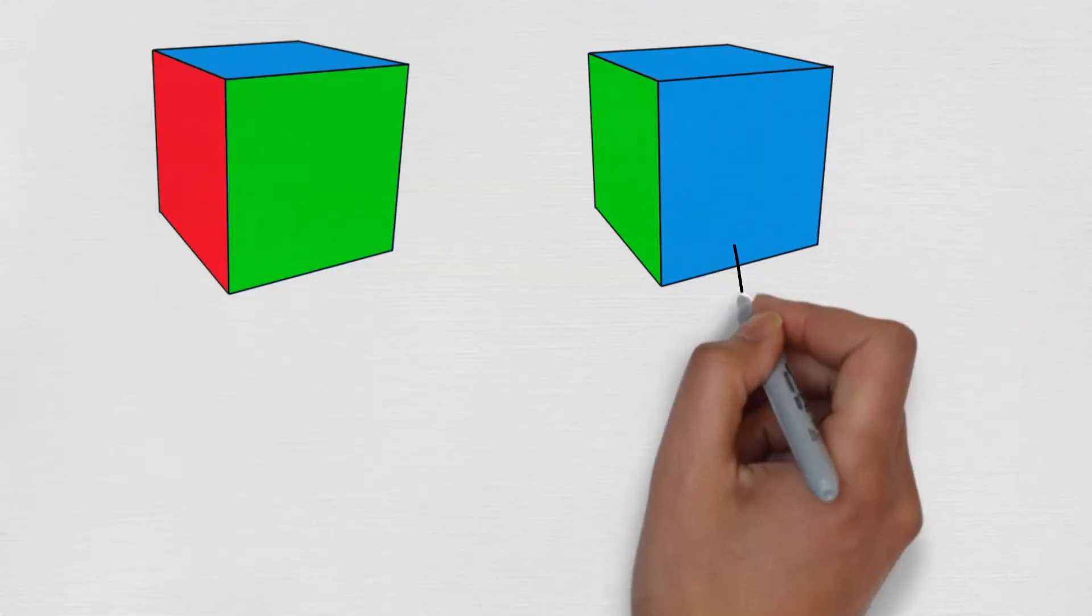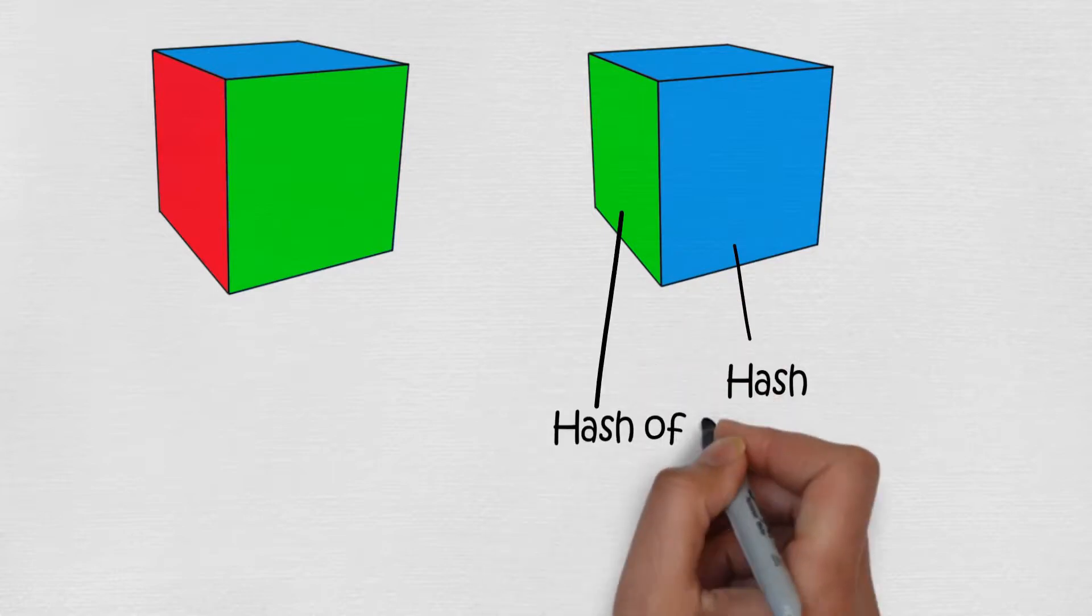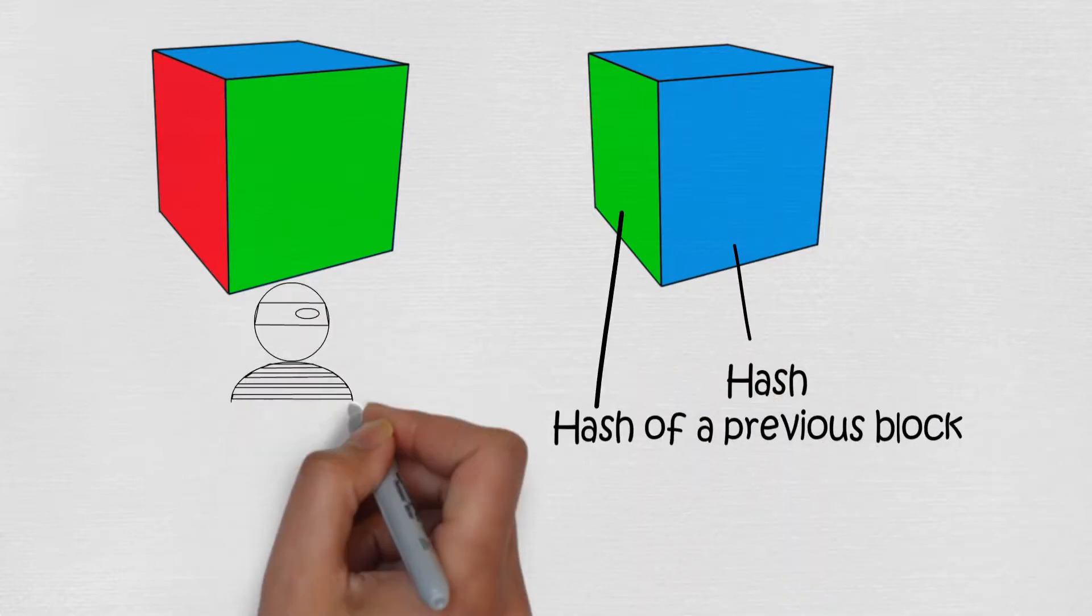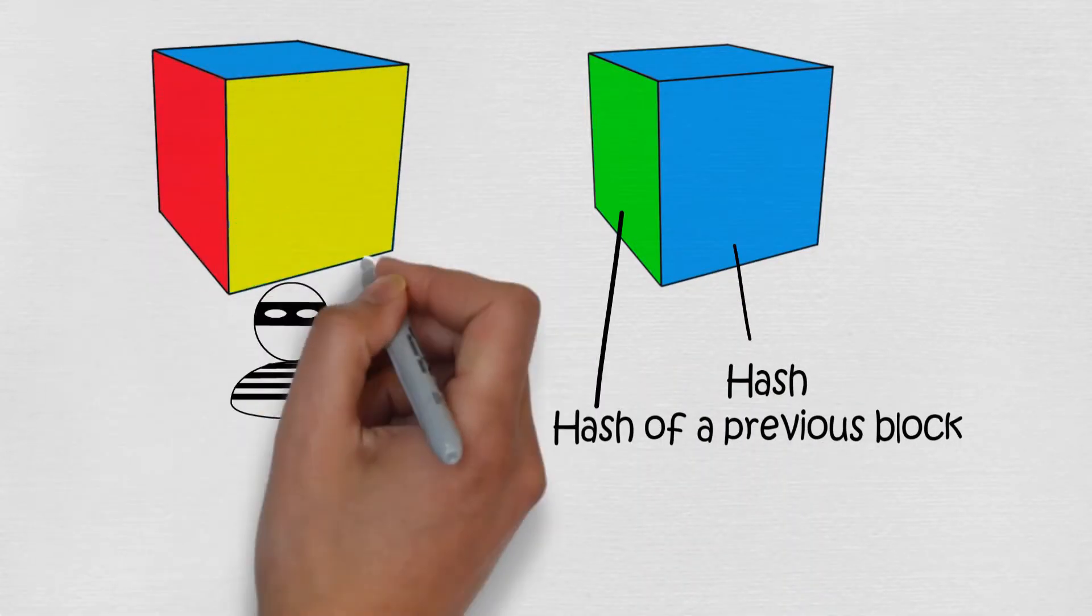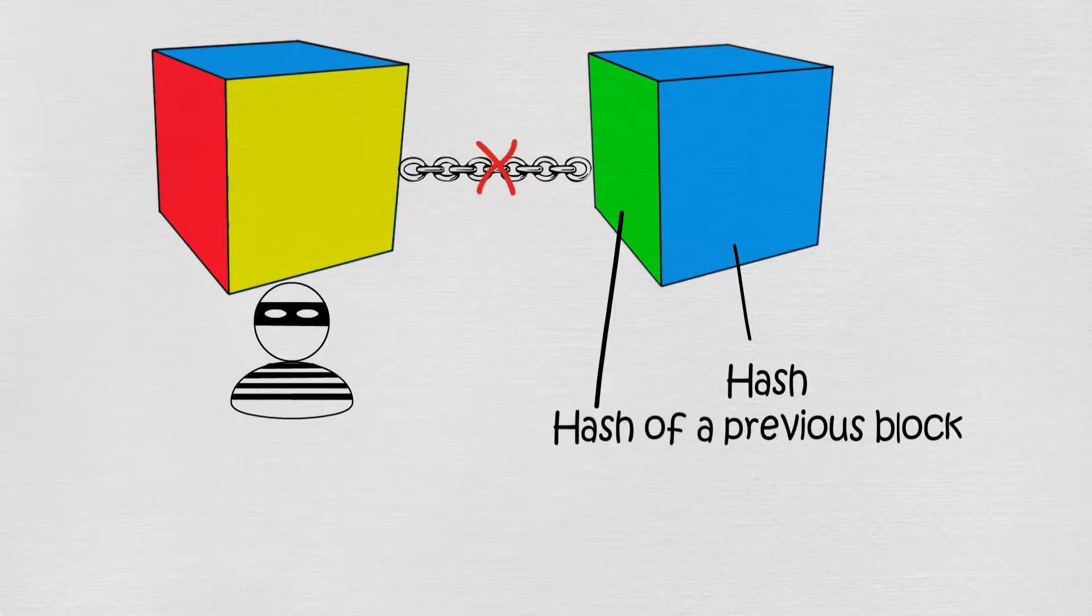Also, as mentioned earlier, every block has a hash and a hash of a previous block. So if you wanted to hack one transaction, it would change the hash of that block, which means that it wouldn't connect with the next block. So if you want to change one transaction, you would have to change every block after that too.